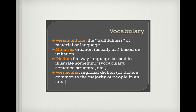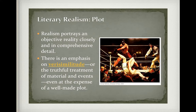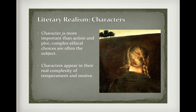Some vocabulary to review: verisimilitude, mimesis, diction, and vernacular. Here are some common features of Realism in literature. It tries to portray things as objectively as possible, with an emphasis on truth — not conveying things based on emotion, but making them as real as possible. Even in Realist painting, seemingly unnatural colors are the Realist trying to recreate light — for example, the center of a boxing ring bathed in light with darkness surrounding it.